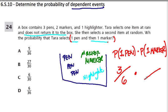Now we're assuming that something was taken out. This is our second step because now we're taking a marker out. We're assuming we took a pen on the first try, so there will still be two markers but now there'll only be five items. So there's a two out of five chance that you're going to pick one marker.